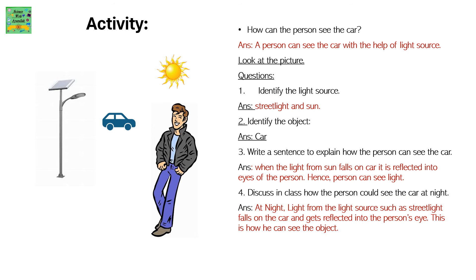Activity: how can a person see the car? A person can see the car with the help of a light source. Identify the light source: the street light and the sun. Identify the object: car. When the light from the sun falls on the car, it is reflected into the person's eyes. Hence, a person can see the car.